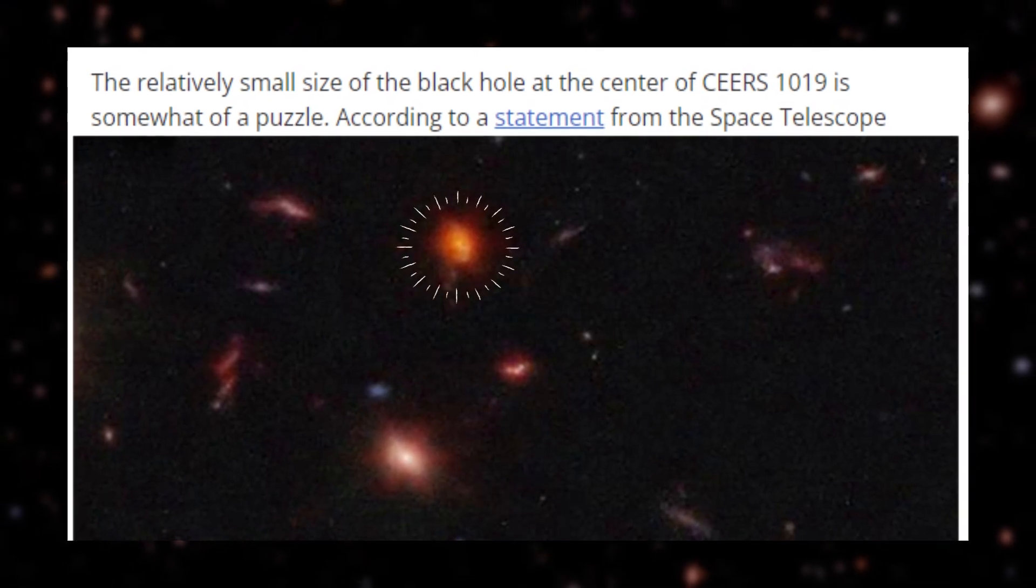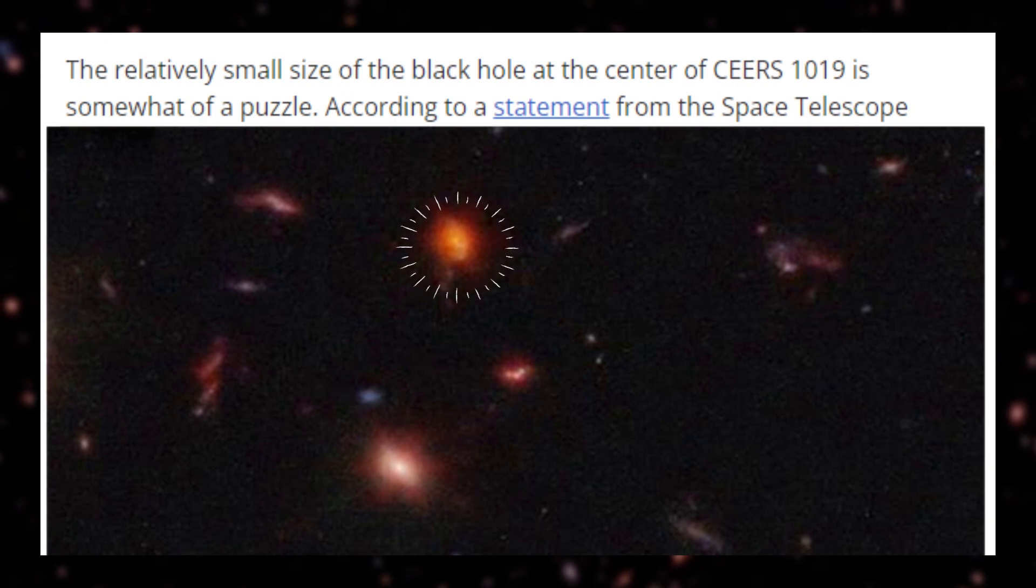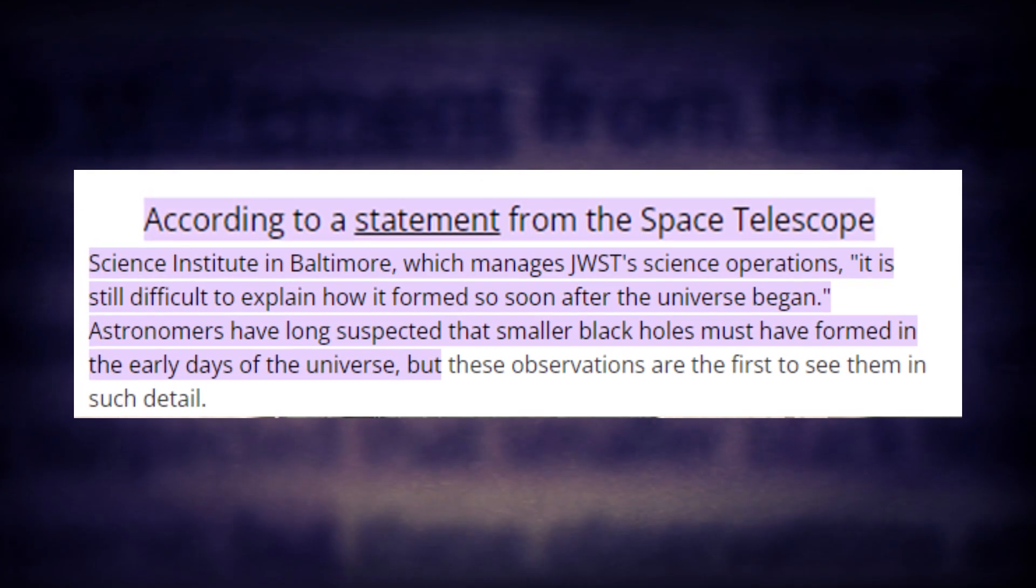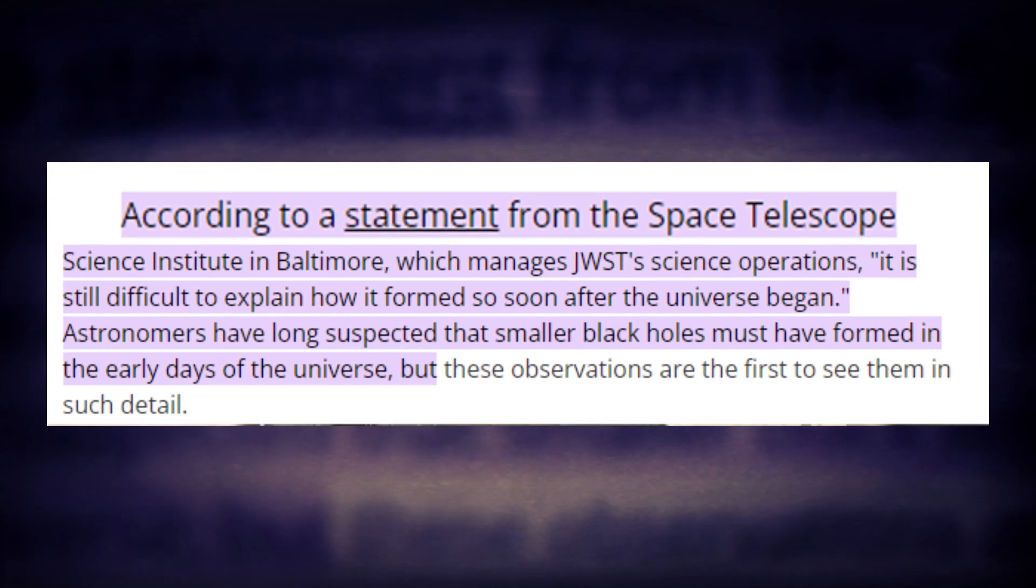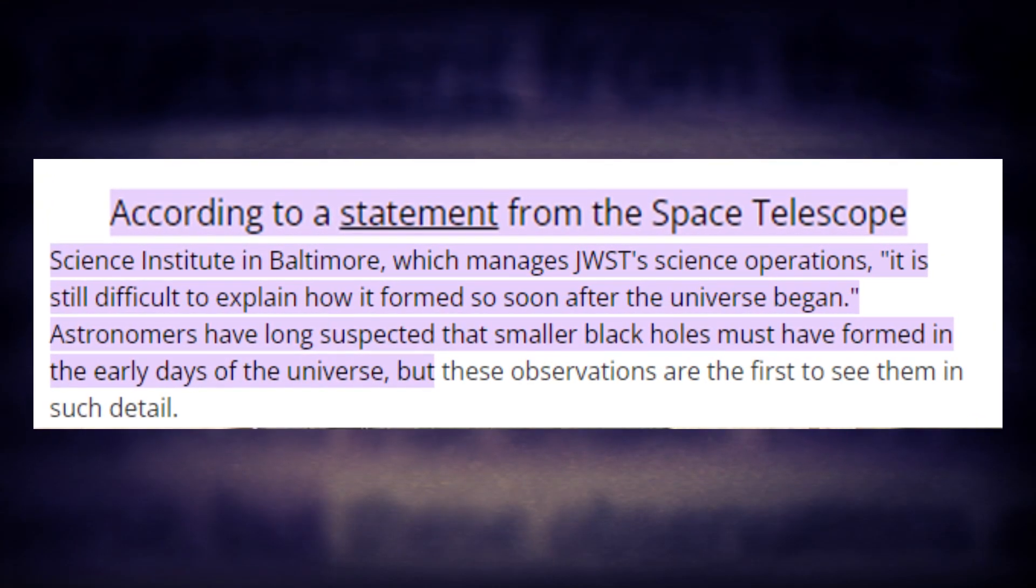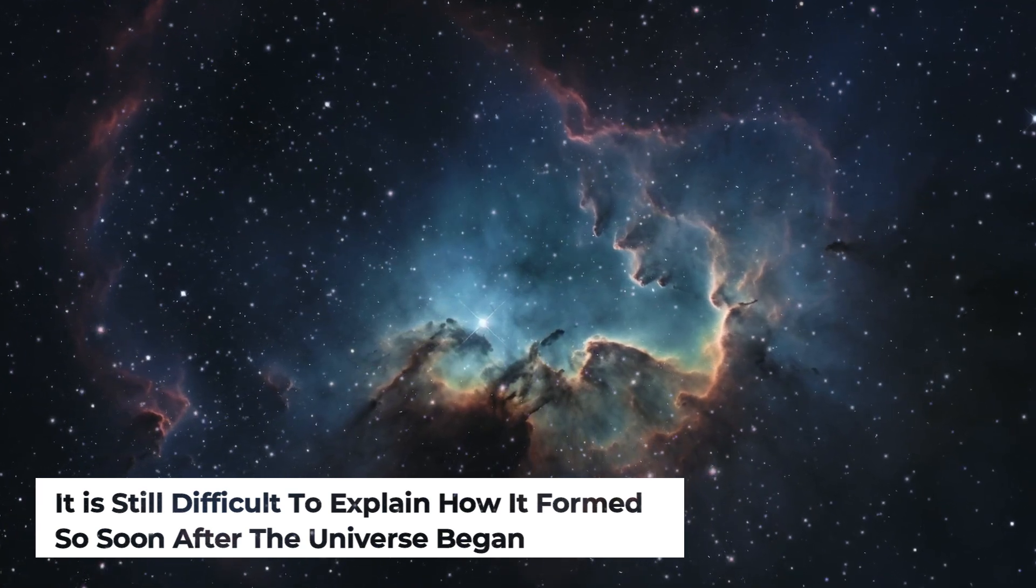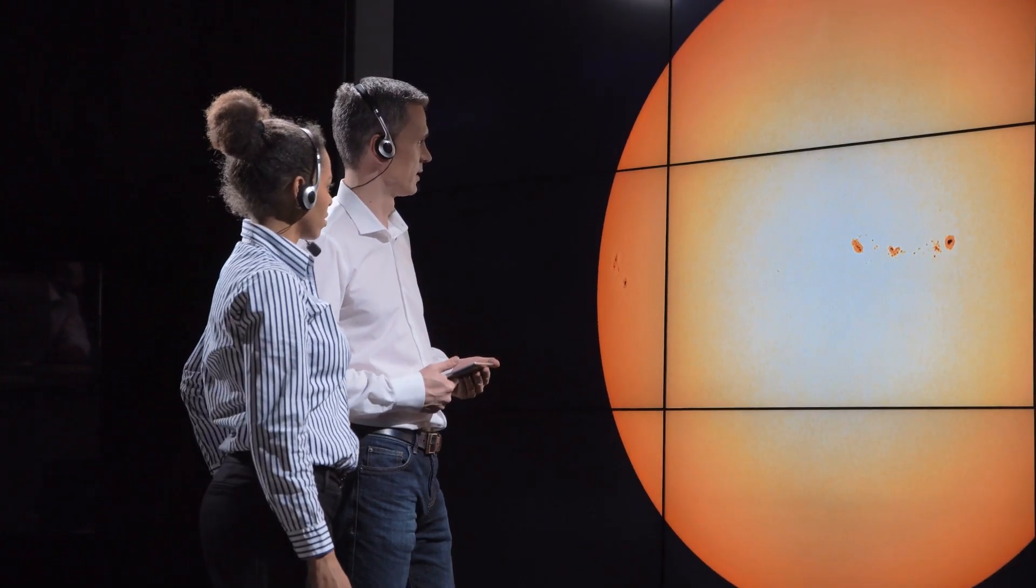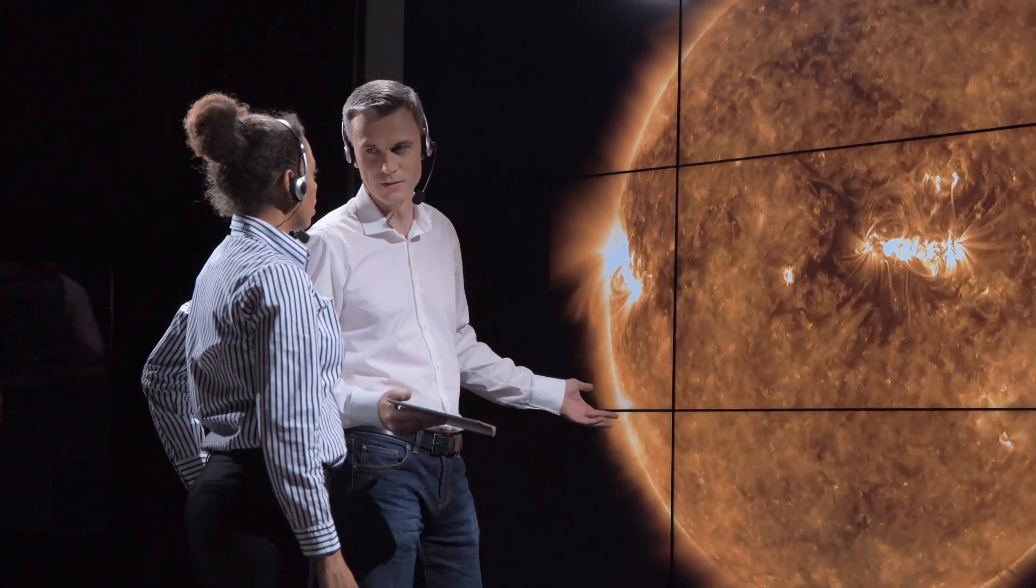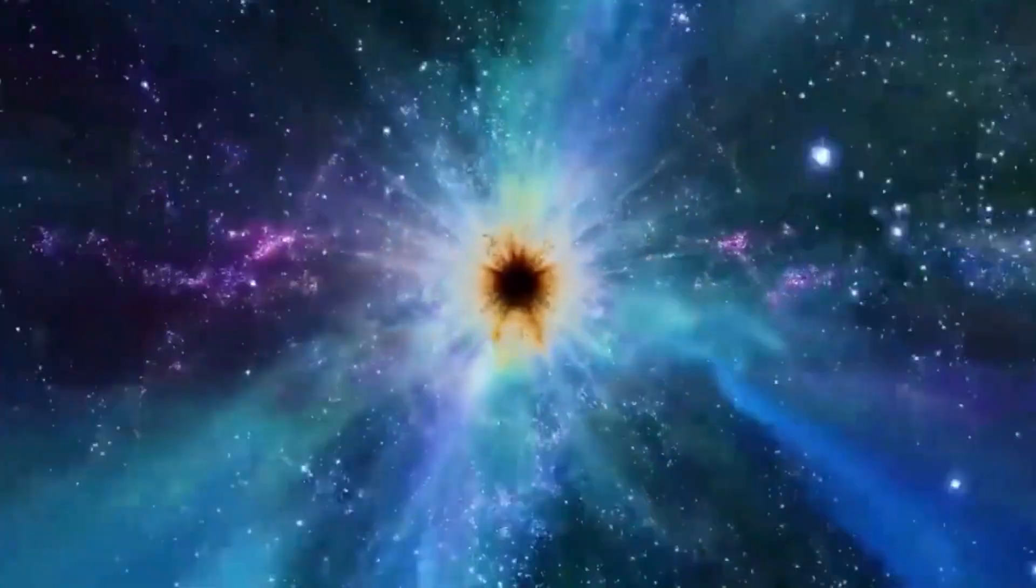The relatively small size of the black hole at the center of CEERS 1019 is somewhat of a puzzle. According to a statement from the Space Telescope Science Institute in Baltimore, which manages the James Webb telescope's science operations, it is still difficult to explain how it formed so soon after the universe began. Astronomers have long suspected that smaller black holes must have formed in the early days of the universe, but these observations are the first to see them in such detail.